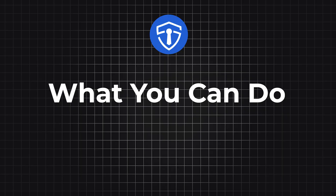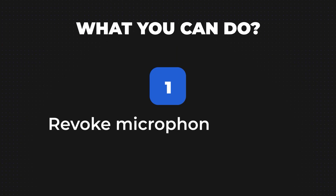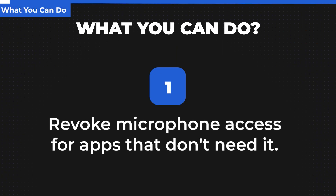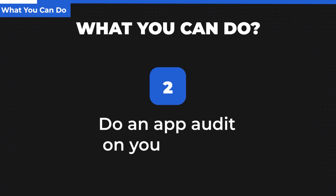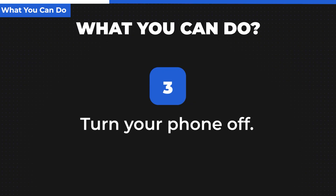As much as the marketer in me wants to give you five simple things you can do today to stop this from happening, I think the reality is we're already sort of the proverbial frog being boiled in a pot of water. This technology is advancing quickly, and by the time I recommend a new tactic, it will probably have been rendered obsolete in this ever-escalating war between ad tech and privacy advocates. So there's not a single simple solution, but you can try a few things. You can revoke microphone access for apps that don't need it — especially be careful if you're on Android, as it is much less privacy-respecting than iPhone. You can do an app audit and delete any apps you haven't used in, say, a month. And my biggest recommendation: you can turn your phone off. You can go places without it.